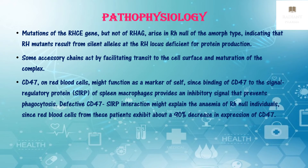The role of accessory membrane chains in pathophysiology is not clearly understood, but some might act by facilitating transit to the cell surface and maturation of the complex. CD47 on red blood cells might function as a marker of self, since binding of CD47 to the signal regulatory protein of spleen macrophages provides an inhibitory signal that prevents phagocytosis. A defective CD47–signal regulatory protein interaction might explain the anemia of RH null individuals, since red blood cells from these patients exhibit about a 90% decrease in expression of CD47.